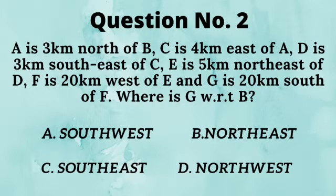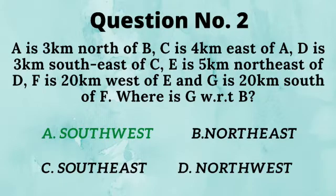Q2. A is 3 km north of B, C is 4 km east of A, D is 3 km south east of C, E is 5 km north east of D, F is 20 km west of E, and G is 20 km south of F. Where is G with respect to B? Answer is south west.